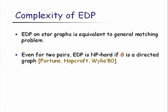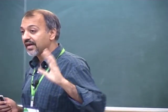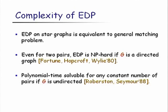When the graph is directed, even on just two pairs S1T1 and S2T2, the problem is NP-hard to solve. If the graph is undirected, the problem is polynomial-time solvable for any constant number of pairs, but this requires heavy machinery from the graph minors work developed by Robertson and Seymour — a highly non-trivial algorithm. Once the number of pairs is unbounded, even in undirected graphs, the problem is NP-hard.